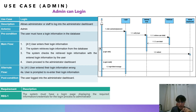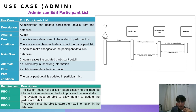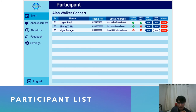My name is Leon Kapong, metric number 70W20, and I will talk about the functional requirements for the admin side. First, admin can login: the system must have a login page displaying the required credentials for the login process to the administrator. There is also the use case description and sequence diagram for this use case. For admin can edit participant list: the system must have a login page, be able to allow admin to update participant details, and store new information in the database. After login, the admin sees the list of all existing events, the participant list, and can send email or delete participants.